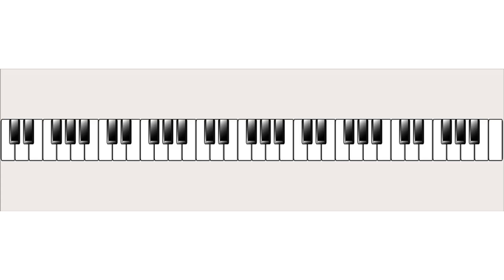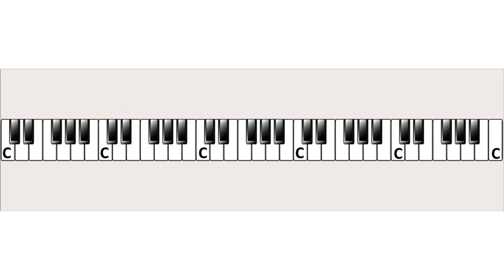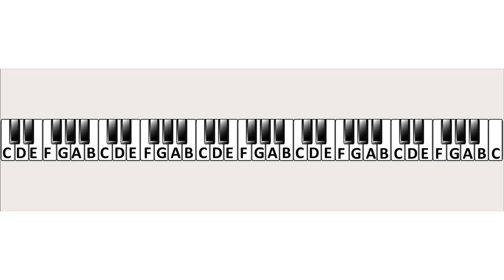The white key at the left side of the two black keys is called C. There are six C's on this keyboard. For the note names of the other white keys we go up alphabetically. On the right side of all the C's we have the D's, then the E's, F's and G's. We stop at G, since the name of the next white key is not H as you would expect. Instead we start at the beginning of the alphabet, so the next two notes are A and B. Now we have named all the white keys.